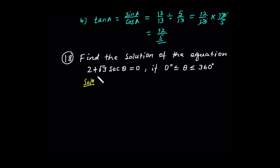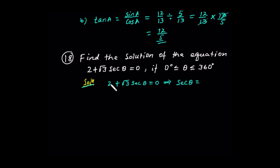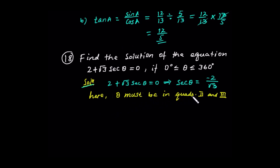We will find the solution of the equation 2 plus √3·sec(θ) equals 0, when θ is between 0 degrees and 360 degrees. Theta must be in quadrants 2 and 3, because secant is negative in those two quadrants.